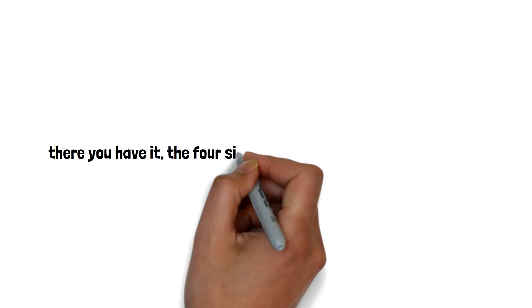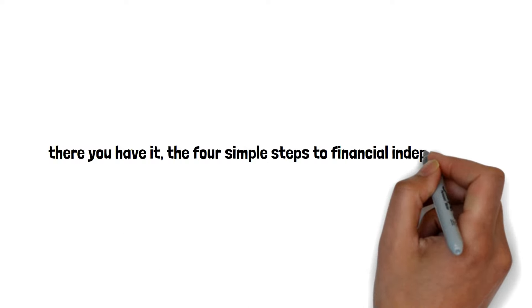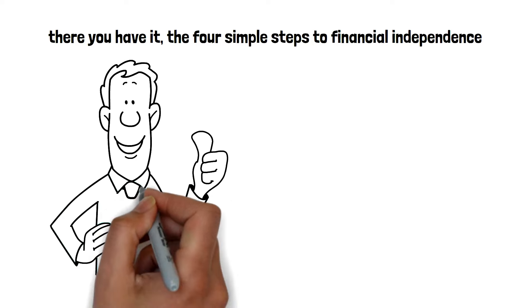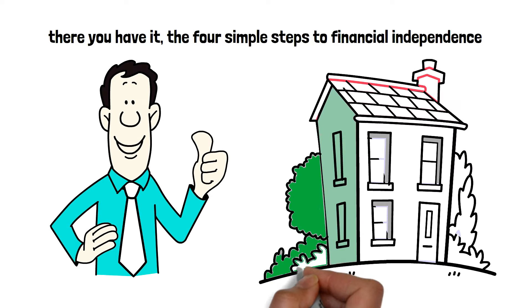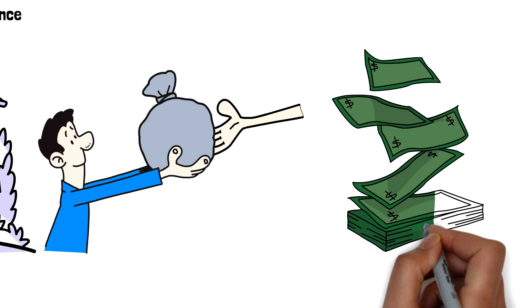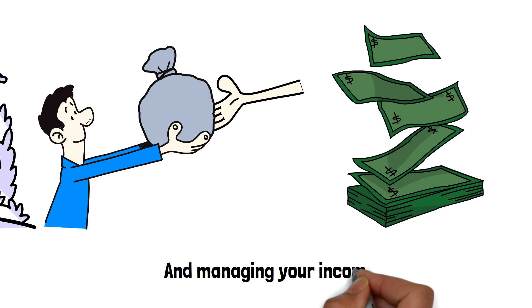So, there you have it. The four simple steps to financial independence. Remember, it's never too late to start planning for your financial future. Start by protecting your assets, paying off debt, saving and investing for your future needs and managing your income.